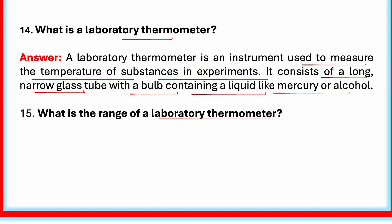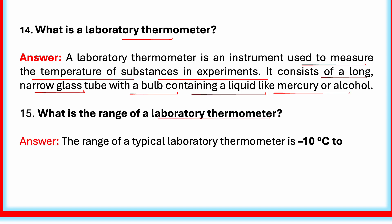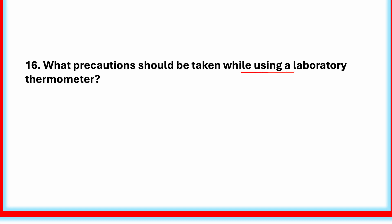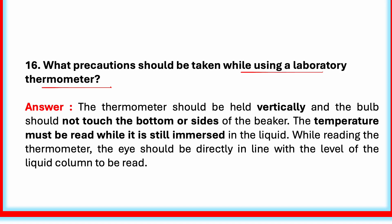What is the range of a laboratory thermometer? The range of a typical laboratory thermometer is minus 10 degrees Celsius to 110 degrees Celsius. Care must be taken while using a laboratory thermometer. The thermometer should be held vertically and the bulb should not touch the bottom or sides of the beaker. If it touches, it may give a wrong reading because the beaker may be hotter or colder than the water. Hold the thermometer straight and vertical, not tilted — if tilted, you cannot read the correct level of the liquid.